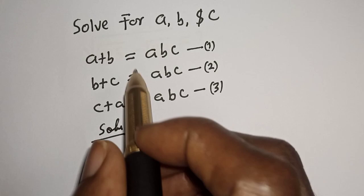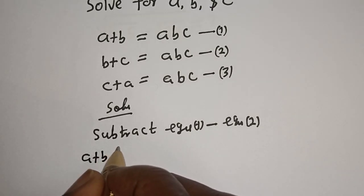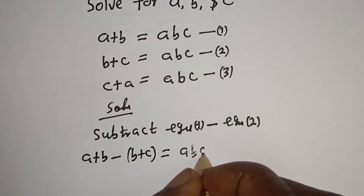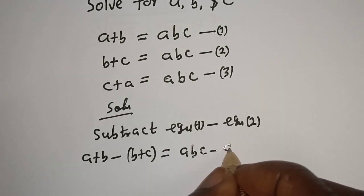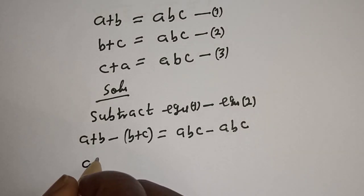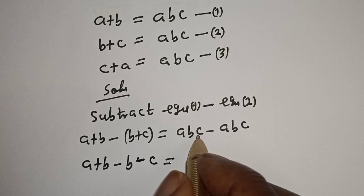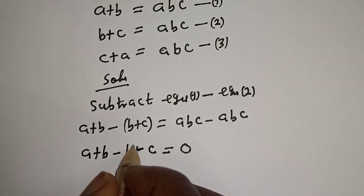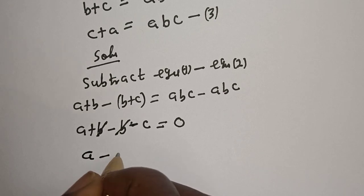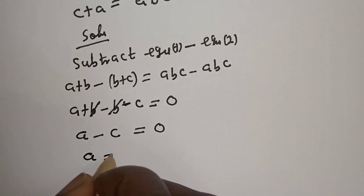Now let's subtract equation one from equation two. Equation one: a plus b, minus equation two: b plus c, is equal to abc minus abc. So a plus b minus b minus c equals zero. This cancels, giving us a minus c equals zero, therefore a is equal to c.